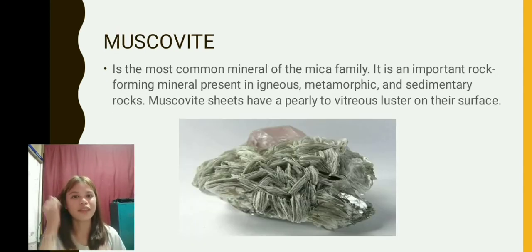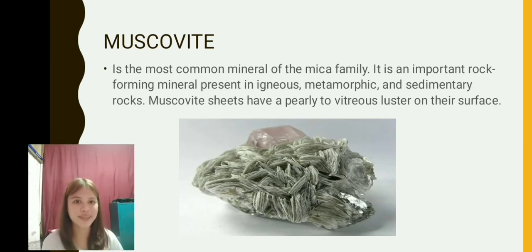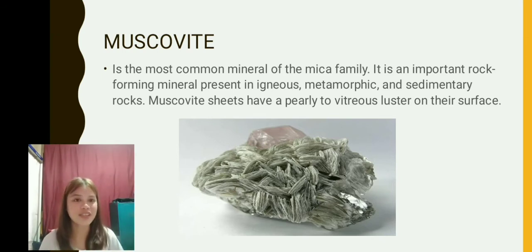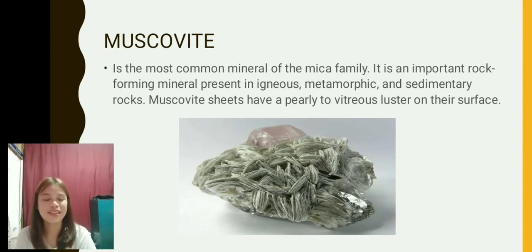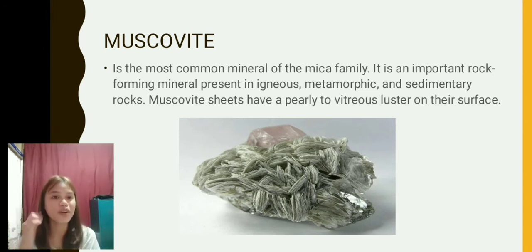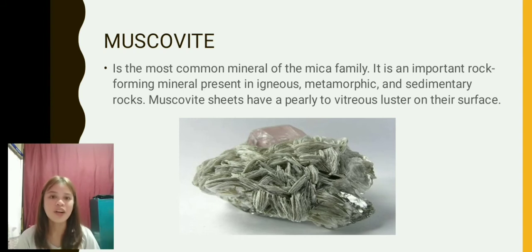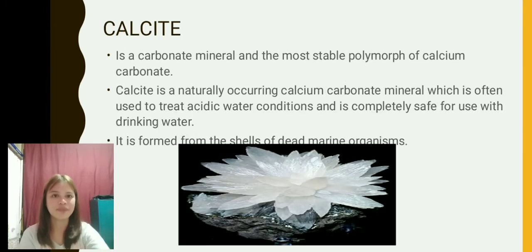Biotite is used as an additive in muds and also as a filler for paints. Muscovite is the most common mineral of the mica family. It is an important rock-forming mineral present in igneous, metamorphic, and sedimentary rocks. Muscovite sheets have a pearly to vitreous luster on their surface. Muscovite can add additional shine to paints and is also used as a filler or extender in paints and other manufactured products.